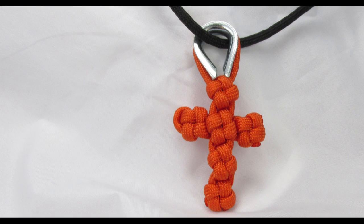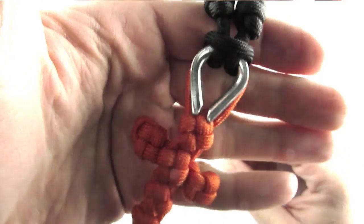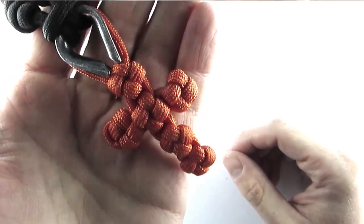Hey guys, in this video we're going to take a look at how to make a paracord cross. It can be made into a great looking keychain or pendant. It looks something like this and it is made using the cross knot.